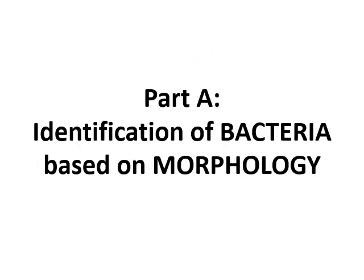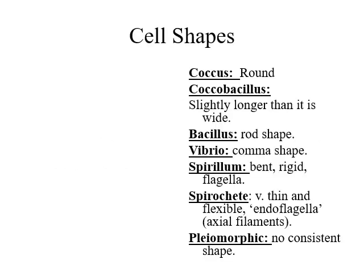Let's start at the beginning — classification and identification of bacteria based on their morphology. If a bacterial cell is round, you call it a coccus. If it's shaped like a rod — longer than it is wide — you call it a bacillus. If it's roughly 1.2 to 1.5 times longer than it is wide, you call it a coccobacillus. Anything more than 1.5 times longer than it is wide is classified as a legitimate bacillus.